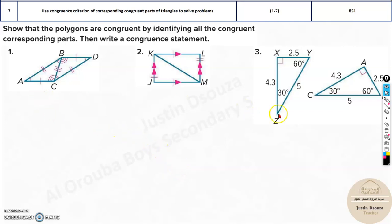In the seventh topic, we have plenty of polygons. And here, we need to see the corresponding parts of them and then write the congruent statement.